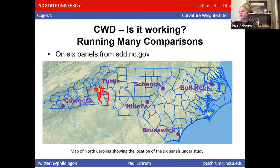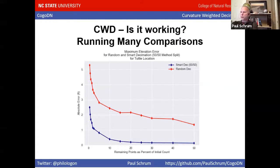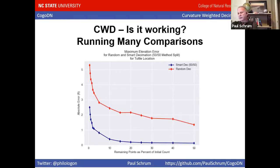We're focusing on Tuttle State Forest because we've only got 20 minutes. The red line represents random decimation and the blue line represents curvature weighted decimation. Along the bottom are the various levels of decimation — 50 means 50% decimation, so the point count is 50% of the original. As you get down closer to 10% and 1%, the absolute error gets worse. That's my best-looking statistic — the maximum error of the whole panel. What about root mean square error? Does that look as impressive?